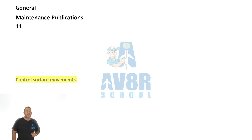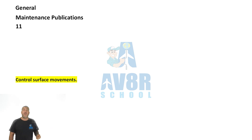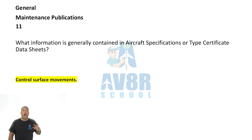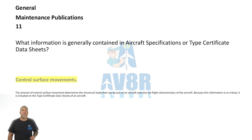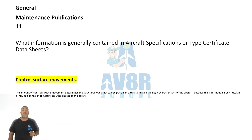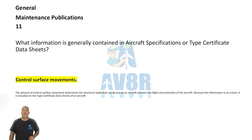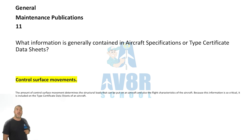Number 11, maintenance publications. What information is generally contained in aircraft specifications or type certificate data sheets? The answer is control surface movements.